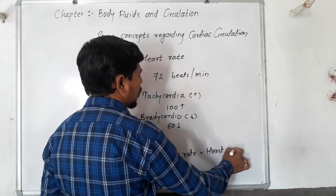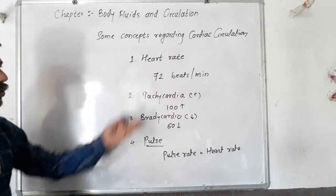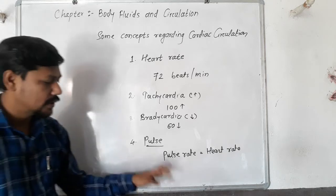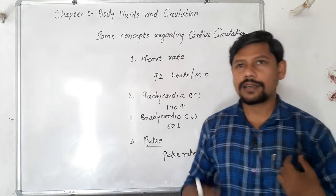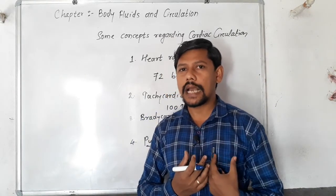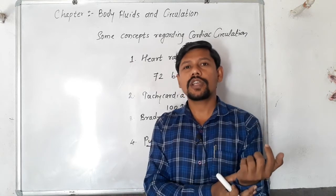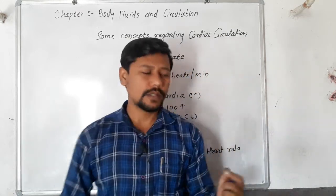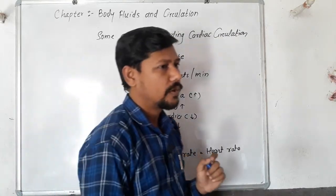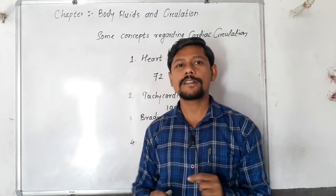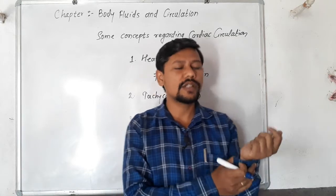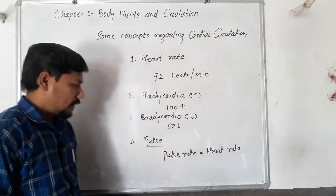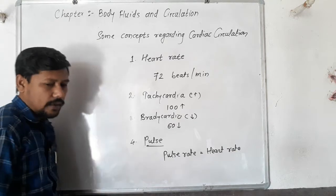So, one beat generates one pulse. If there are 72 beats, then 72 pulses are generated. So if the heart rate is 72 beats per minute, then the pulse rate is also 72 per minute. The pulse is the wave generated due to the contraction of ventricles, and this wave passes along the wall of our blood vessels, which we can feel by touching the vessels with our fingers. So the pulse rate is equal to the heart rate.